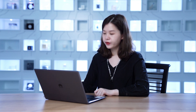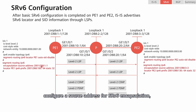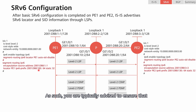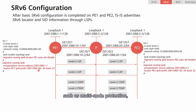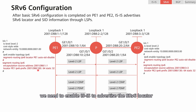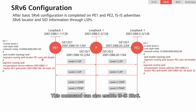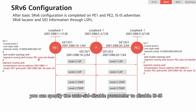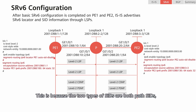Next, we'll look at SRV6 configuration, which primarily involves P1 and P2. We should enable SRV6 globally, configure a source address for SRV6 encapsulation, and then configure a locator, which is a prefix address used for locating in the SRV6 domain. Each locator is typically unique in the SRV6 domain, though in scenarios such as multi-node protection, different devices may share the same locator. After configuring SRV6, we need to enable IS-IS to advertise the SRV6 locator through the segment-routing IPv6 locator command. You can specify the auto-SID disable parameter to prevent IS-IS from dynamically generating End and End.X SIDs, as these path SIDs are not used in SRV6 BE scenarios.